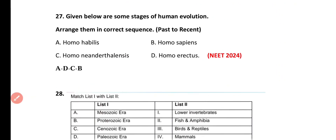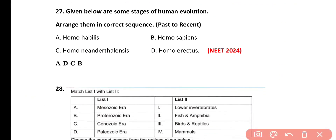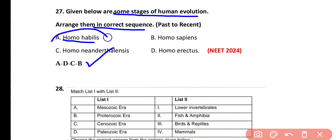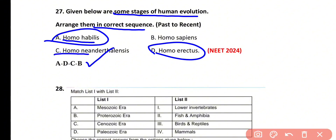Question number 27. Arrange the following stages of human evolution in correct sequence from past to recent: A — Homo habilis, B — Homo sapiens, C — Homo neanderthalensis, D — Homo erectus. The correct chronological sequence is A, D, C, B — meaning first Homo habilis, then Homo erectus, then Homo neanderthalensis, and finally Homo sapiens, which is the most recent.